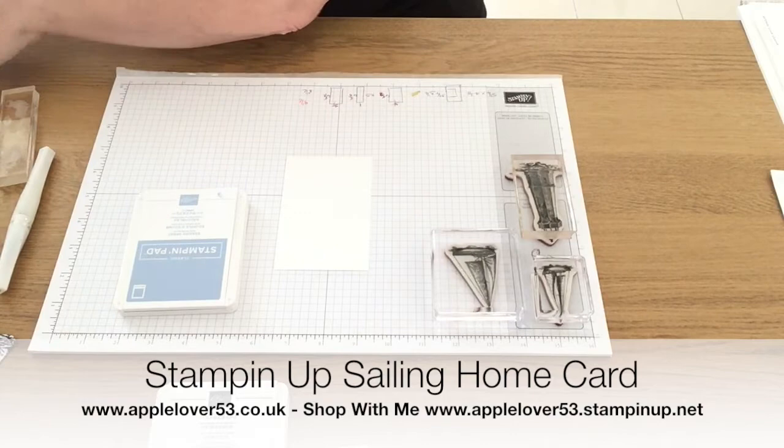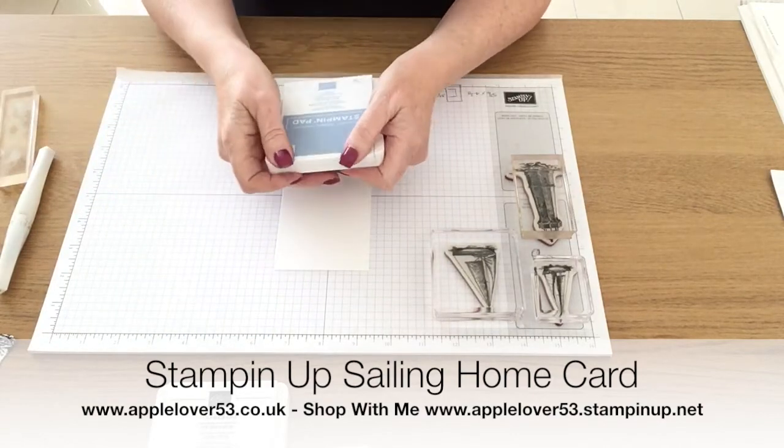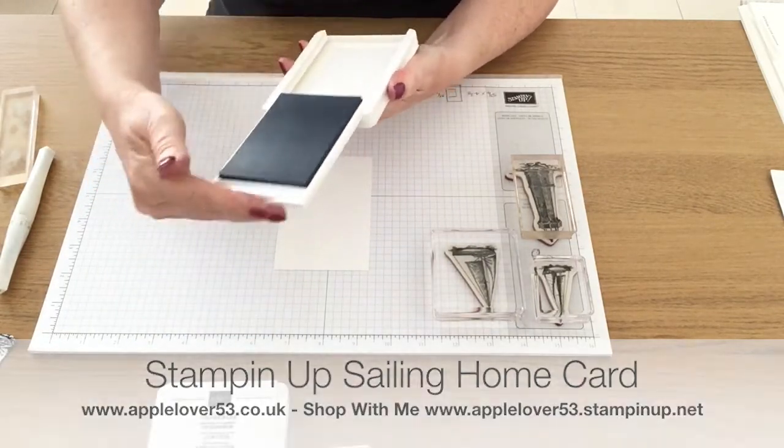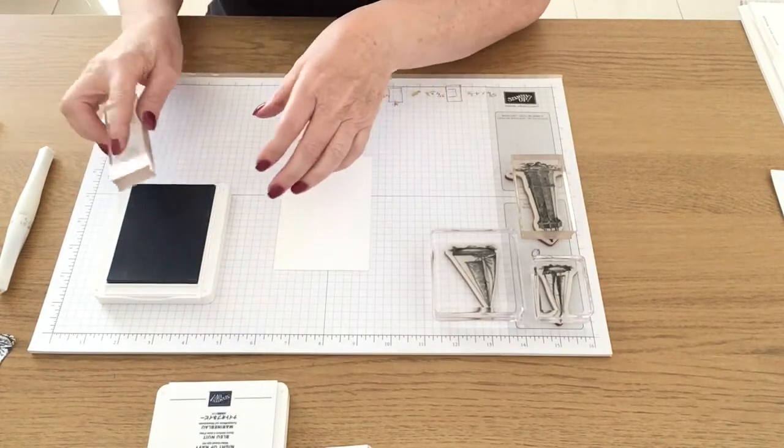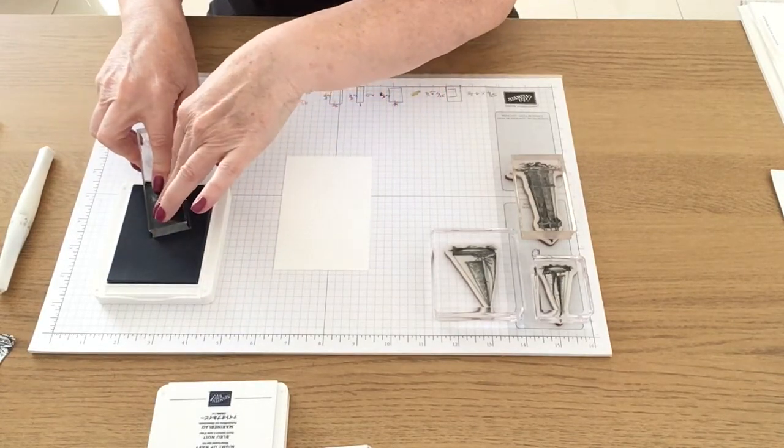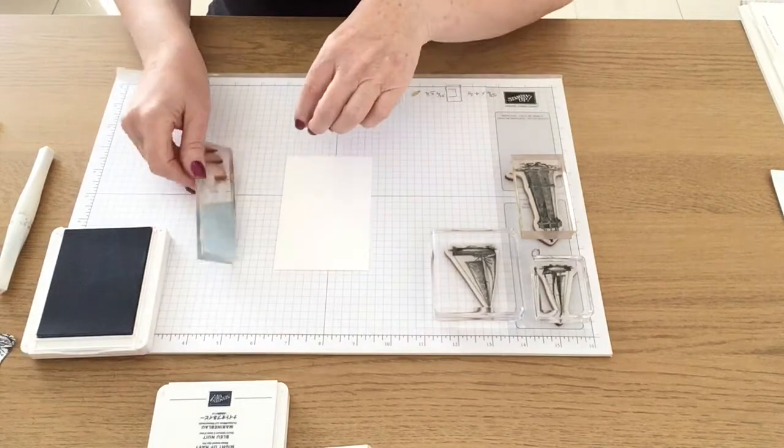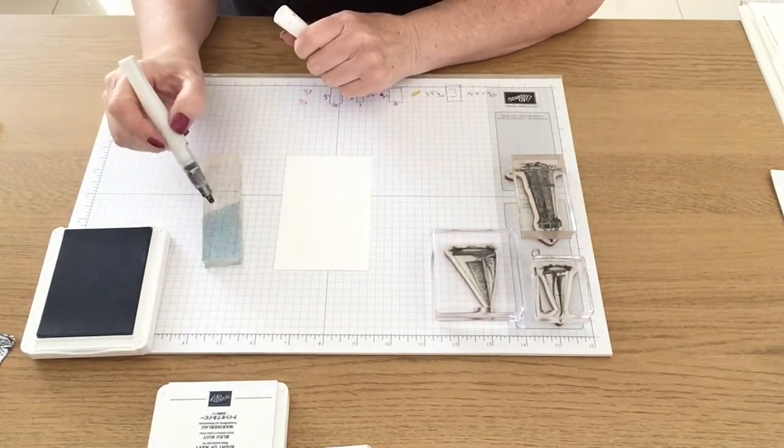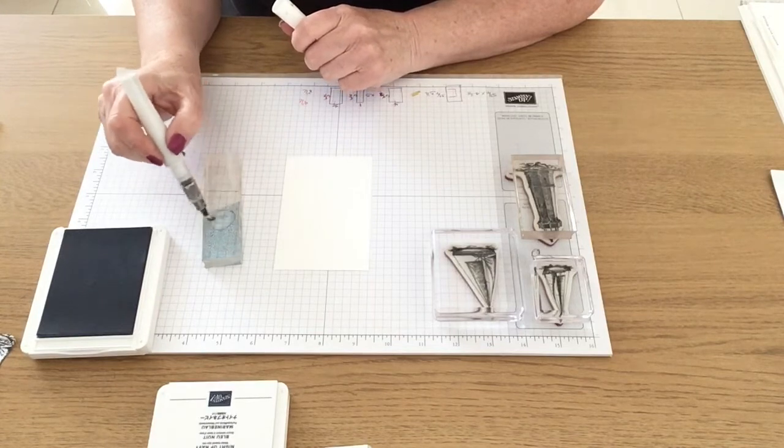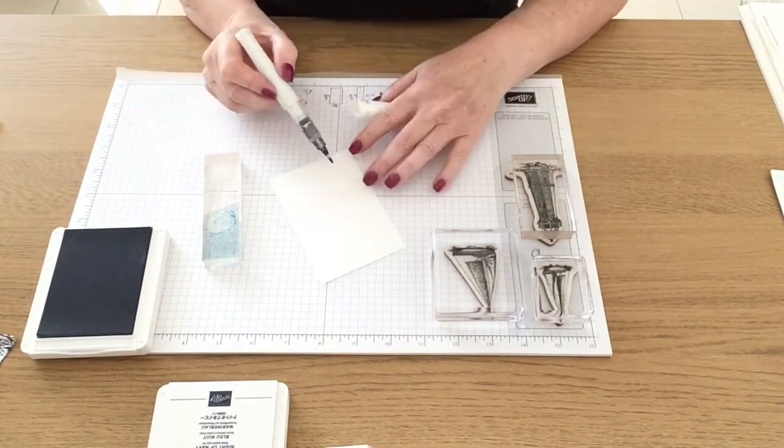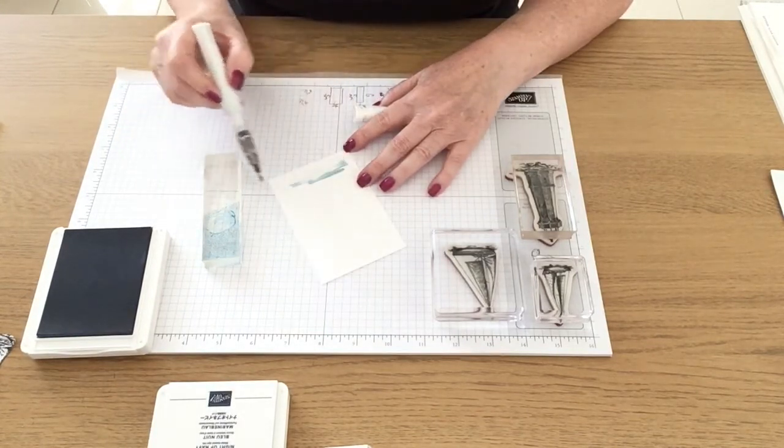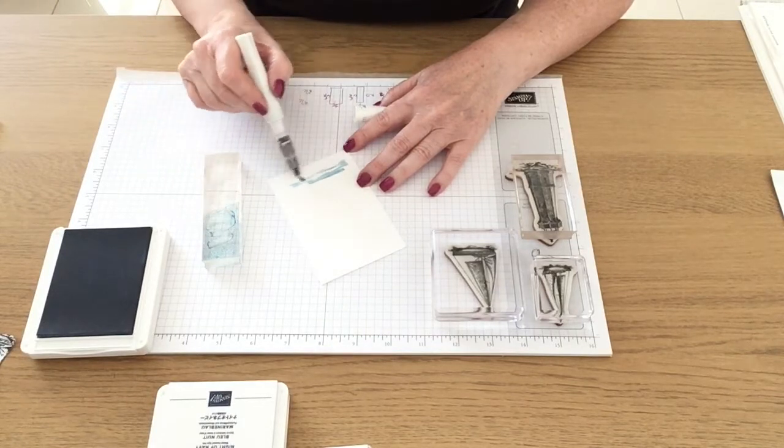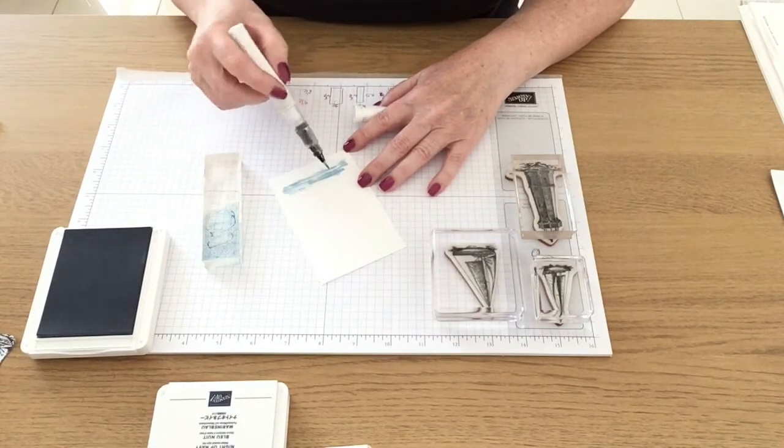Now I'm just going to take an acrylic block and I'm going to pick up some of the ink from the ink pad and I'm going to use this as a palette. I'm going to use my Wink of Stella pen and I'm going to pick up some of the ink and just brush lightly on the bottom part of this piece of whisper white card.